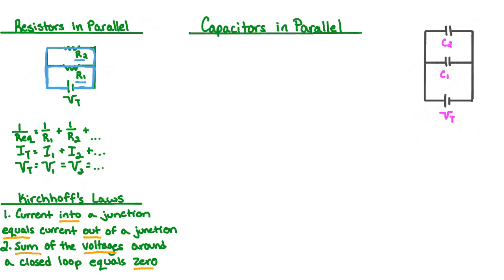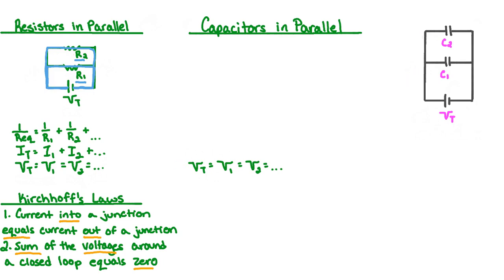Now let's compare what we know about resistors in parallel to capacitors in parallel. For capacitors in parallel, we have the same relationship for potential difference across each branch as we did with the resistors. Once again, we apply Kirchhoff's second law, and we have single capacitors in parallel in our circuit. This means that the potential difference of the battery, V total, is equal to the potential difference across capacitor 1, V1, is equal to the potential difference across capacitor 2, V2, and so on for as many capacitors as we have in parallel.